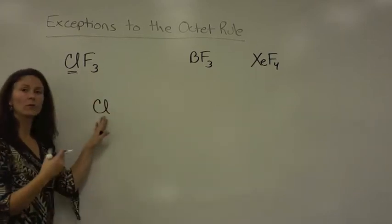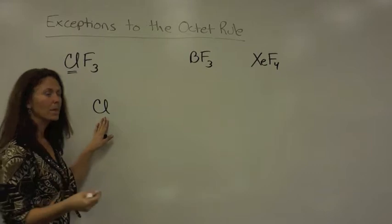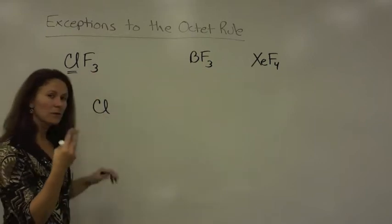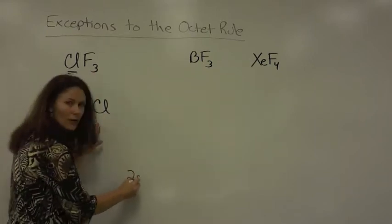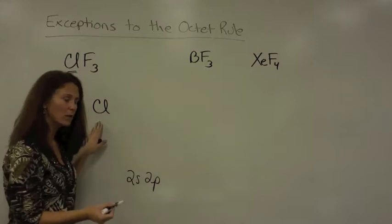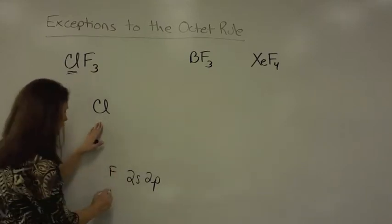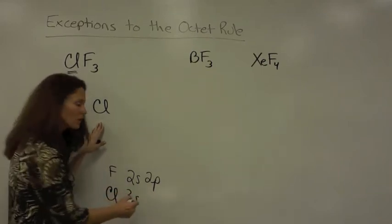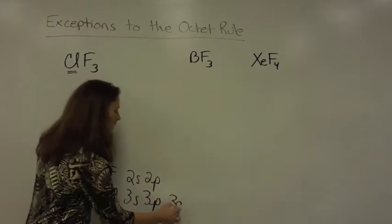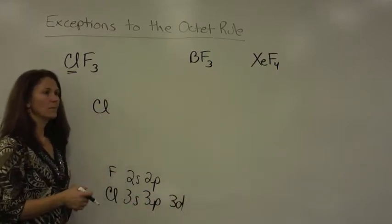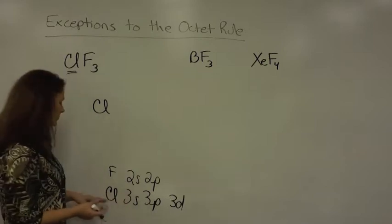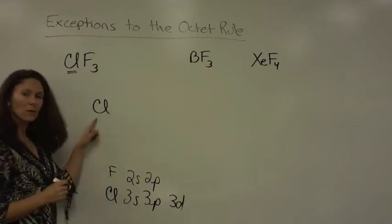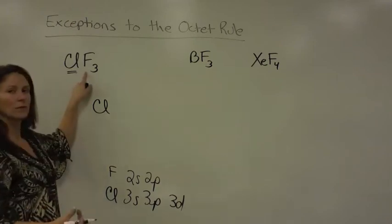Chlorine, if you look on the periodic chart, is in period three. Fluorine on the periodic chart is in period two. Since fluorine is in period two, it only has the 2s and the 2p available to hold electrons. Whereas chlorine is in period three, we know that we have a 3s available, a 3p available, and a 3d. By process of elimination, you know chlorine can actually hold more than an octet and not fluorine. So chlorine is going to go in the middle, and we need to bond three fluorine atoms to it.